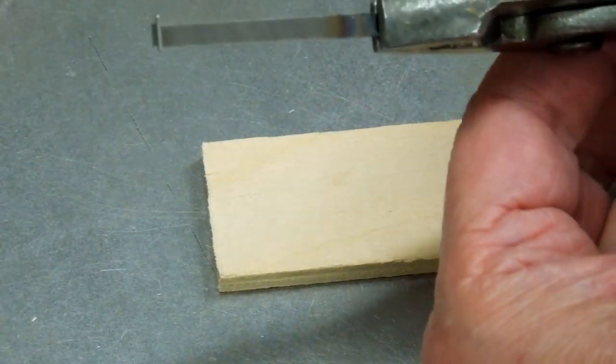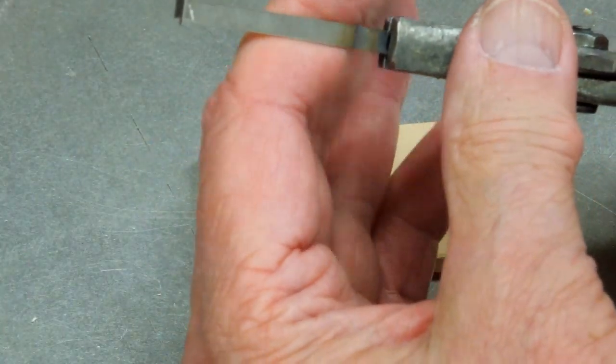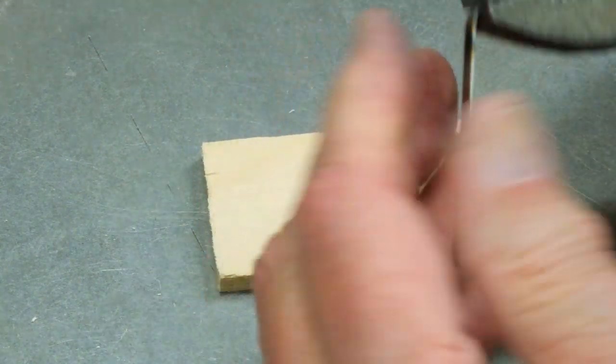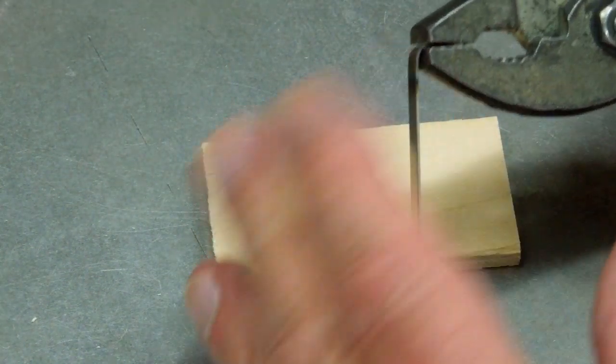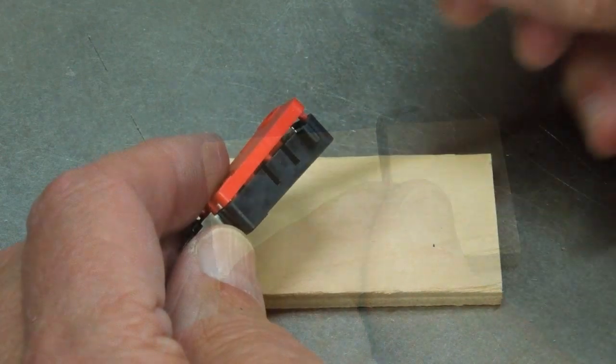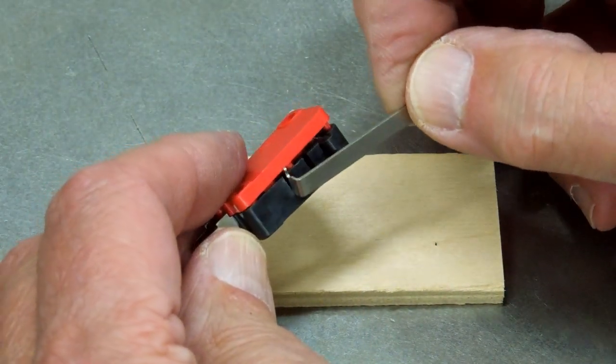Put a pair of pliers right on the mark. Make about a 90 degree bend. This goes into the second slot on this switch.